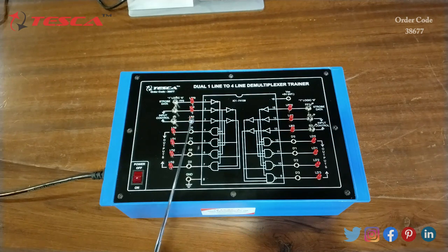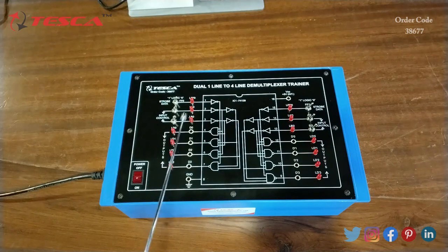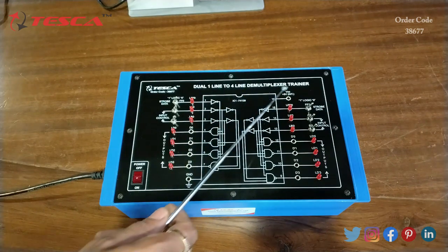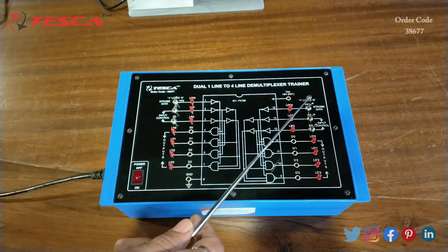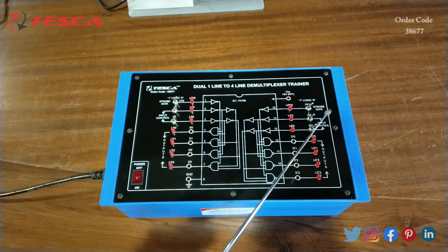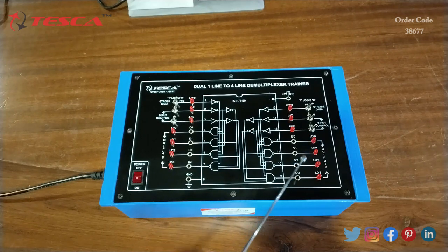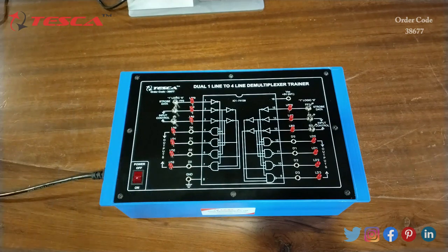These are the outputs D0, D1, D2, D3, and these LEDs indicate the output. This is the ground, this is plus 5 volts. Similarly, there's another FF0 with input ports and output ports. These LEDs will indicate the output. This is the power on-off button.